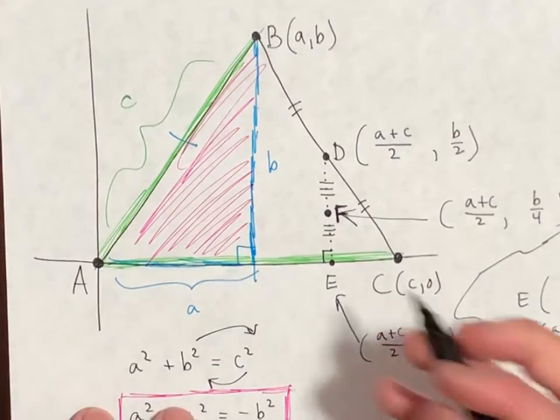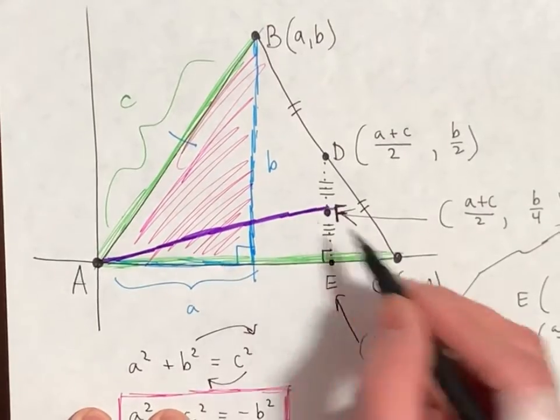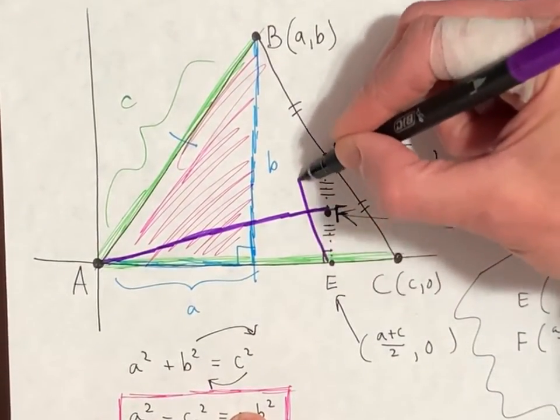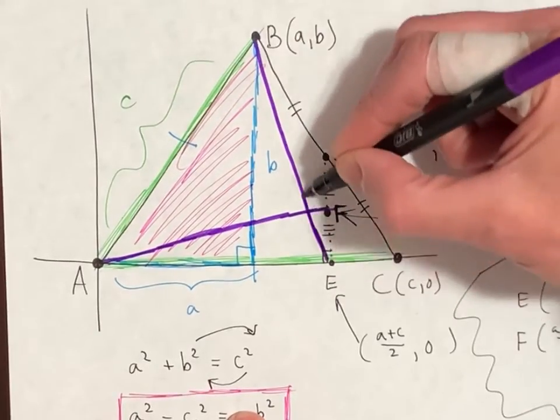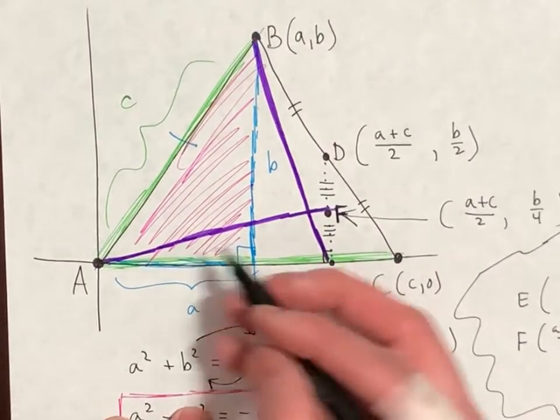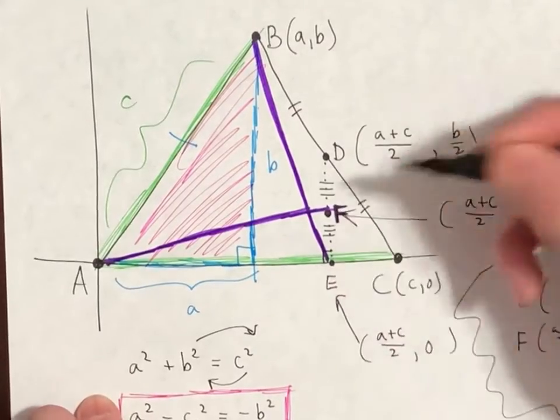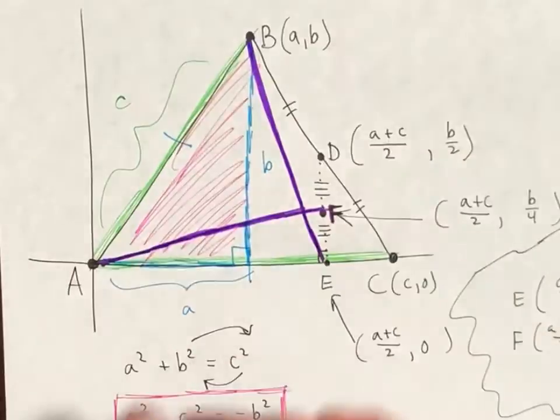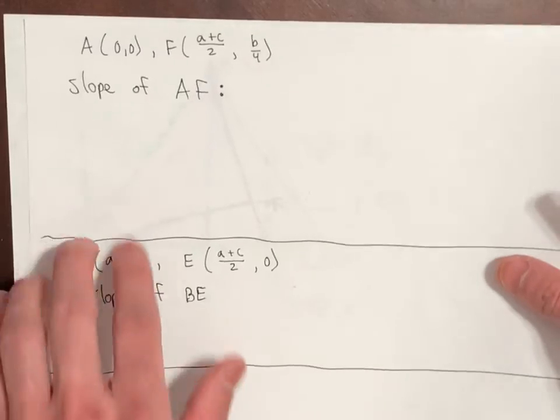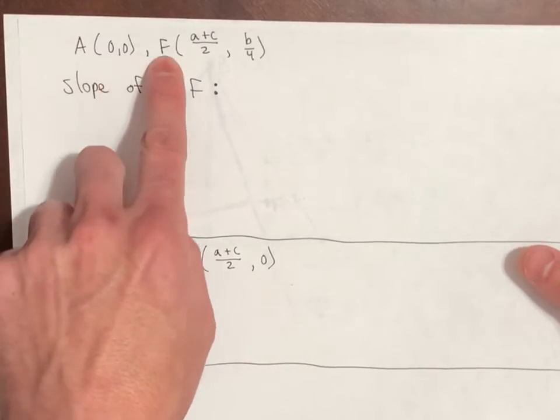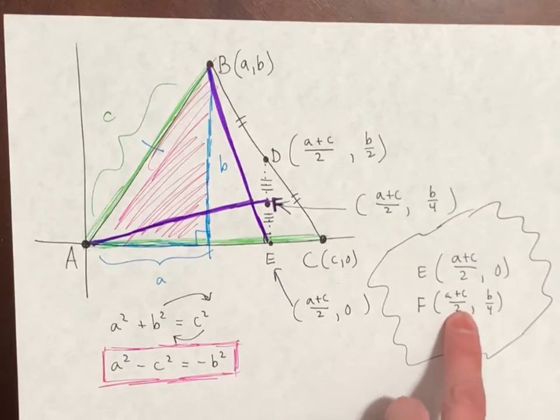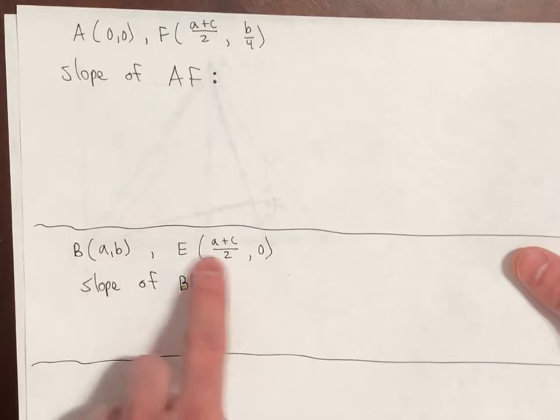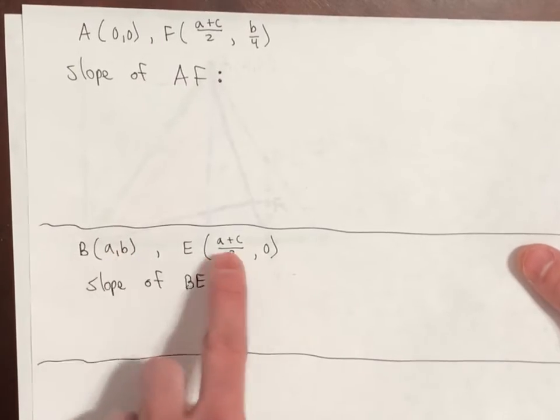The last part is to show that AF, this purple, is perpendicular to BE, this guy here. I've written them down right here. Remember that point A is at 0, 0. Point F is located here, that's what we found the first time. And the coordinates of B and E are there and there. These things we found. This was given to us, this we found.